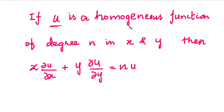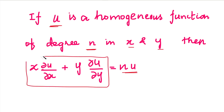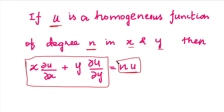So, if u is a homogeneous function of degree n in variables x and y, then by Euler's theorem: x times ∂u/∂x plus y times ∂u/∂y equals n times u. The left-hand side value becomes n times u.